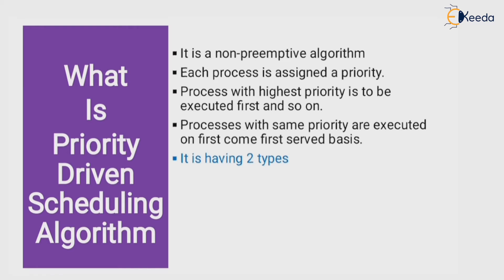It has two types: first is fixed, second is dynamic. Fixed is again having two types — rate monotonic and deadline monotonic. Dynamic is again having two types — earliest deadline first and least slack time.